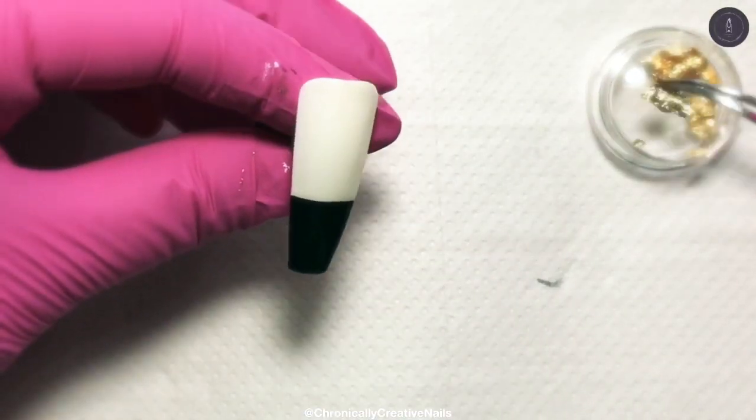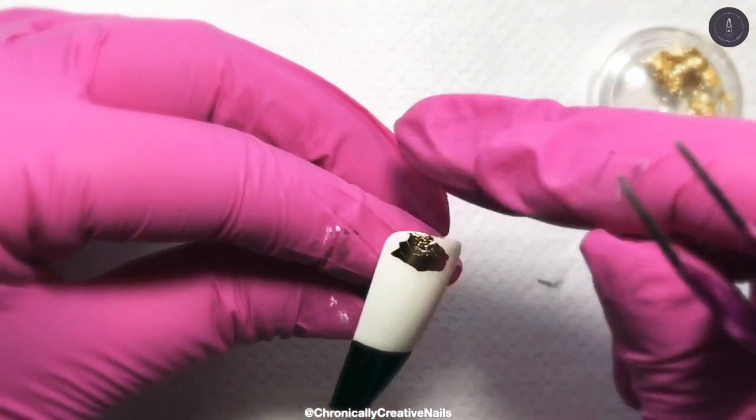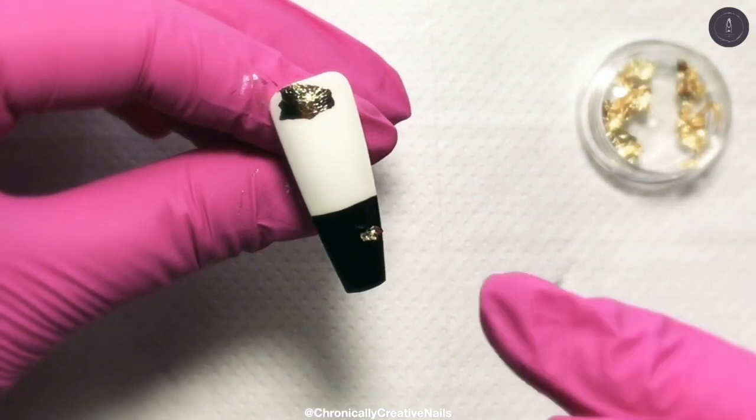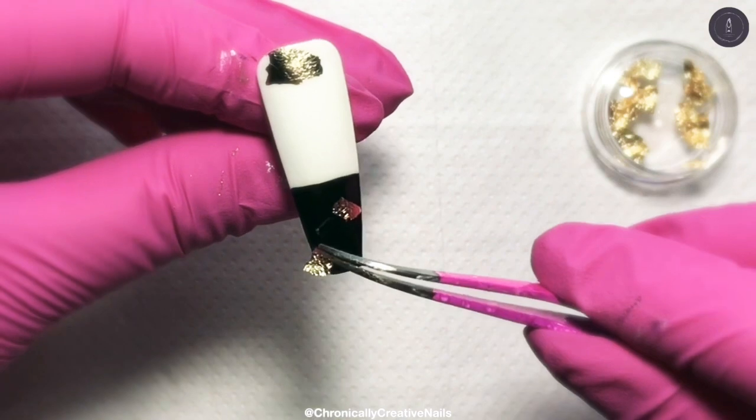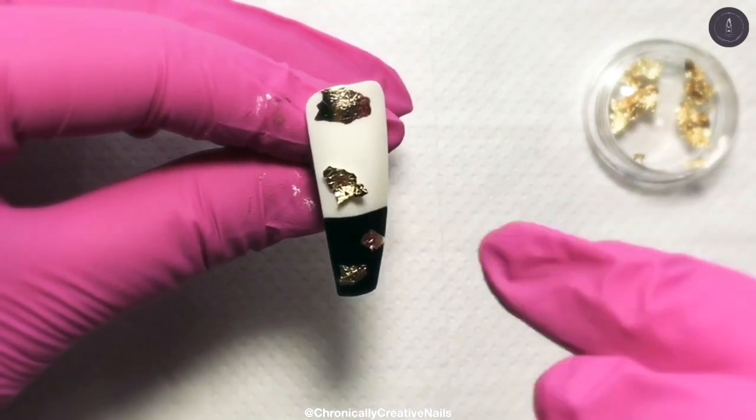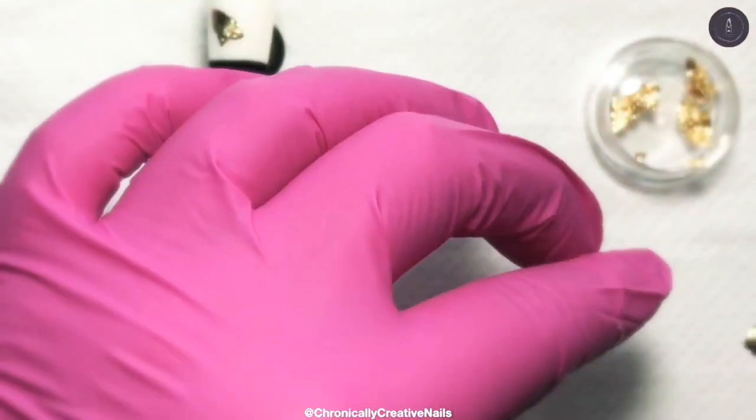So I'm going to take some of the gold leaf again, just add that on. We're adding it in the black as well as the white, so we're just going to tie the whole design together by using both on one nail.